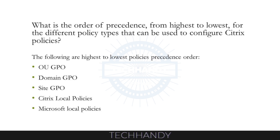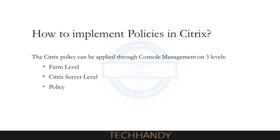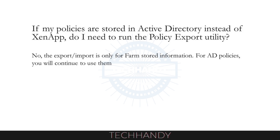What is the order of precedence, from highest to lowest, for the different policy types that can be used to configure Citrix policies? The following is the highest to lowest policy precedence order: OU-GPO, Domain-GPO, Site-GPO, Citrix Local Policies, Microsoft Local Policies. How to implement policies in Citrix? The Citrix policy can be applied through console management on the following three levels: farm level, Citrix server level, and policy. If policies are stored in Active Directory instead of ZenApp, you do not need to run the policy export utility — the export/import is only for farm-stored information; for AD policies, you will continue to use them.